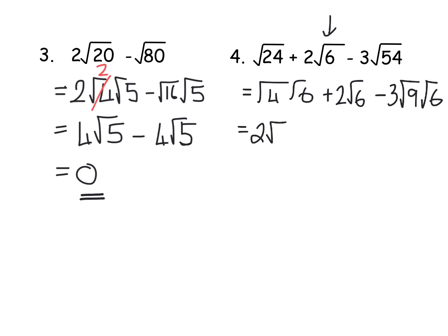So then my simplifying part, square root of 4 is 2. So I've got 2√6 plus 2√6. Square root of 9 is 3. Times the 3 in the front is 9. So I have 2 plus 2 is 4. Minus 9 is negative 5. So I have negative 5√6.